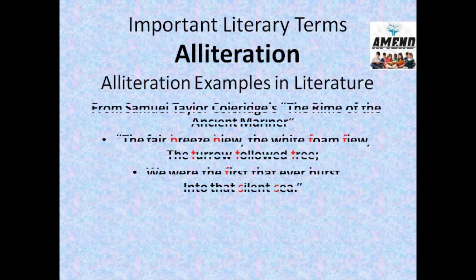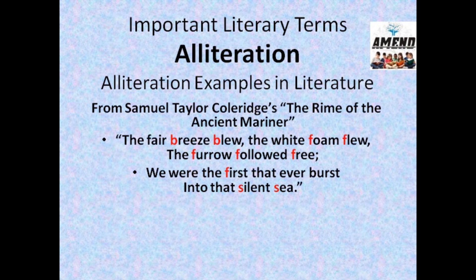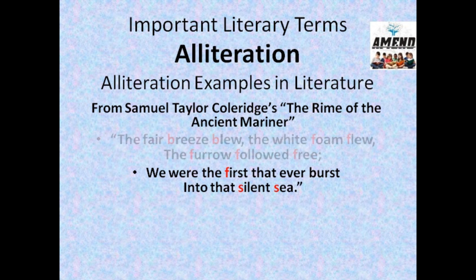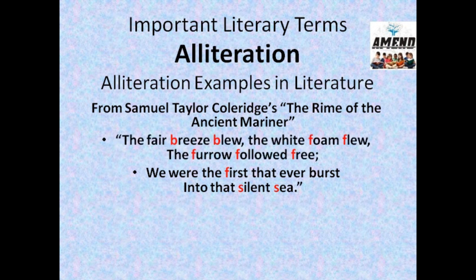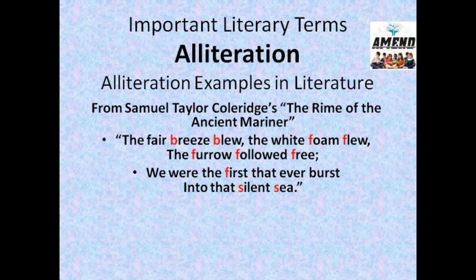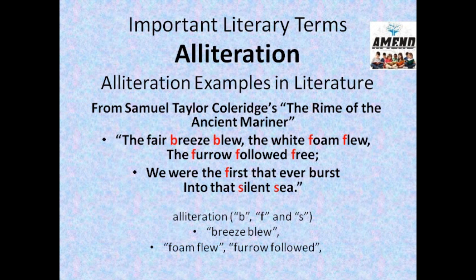Now let's see where alliteration is used in famous poetry. From The Rime of the Ancient Mariner by S.T. Coleridge: 'The fair breeze blew and white foam flew, the furrow followed free, we were the first that ever burst into that silent sea.' In the above lines, we see alliteration of the sounds B, F, and S — in 'breeze blew,' 'foam flew,' 'furrow followed,' and 'silent sea.'